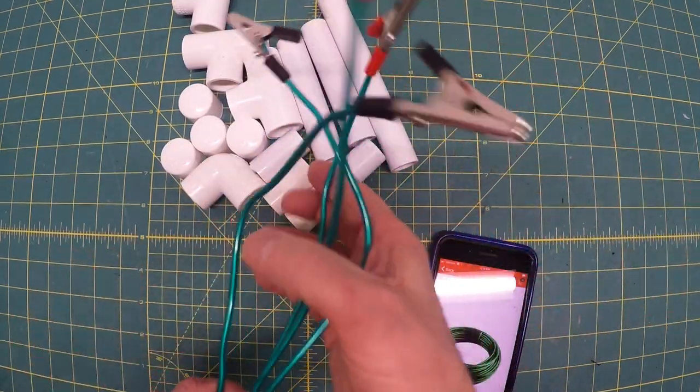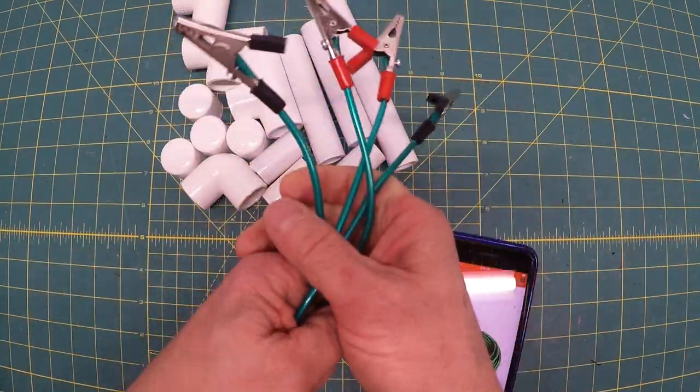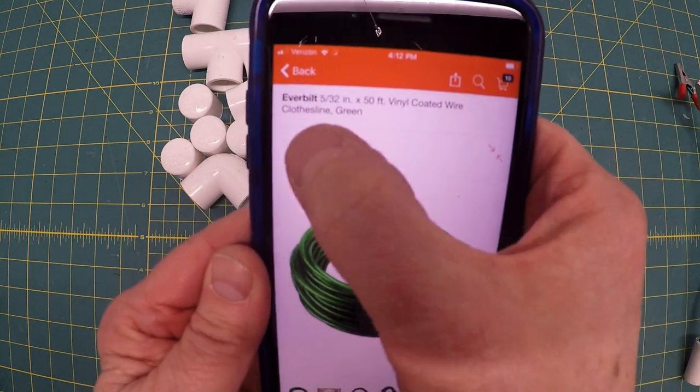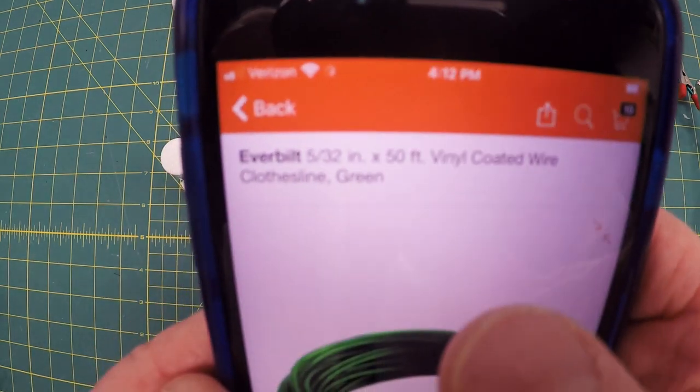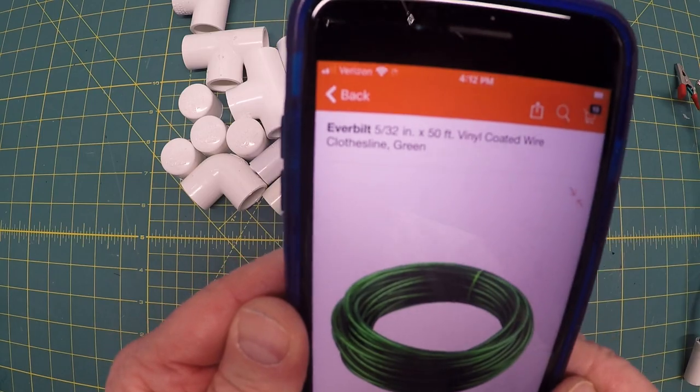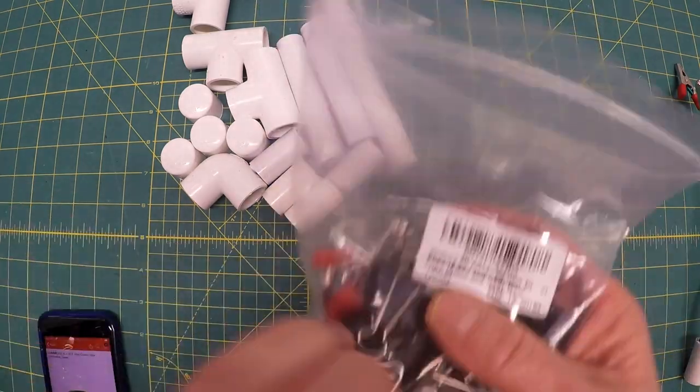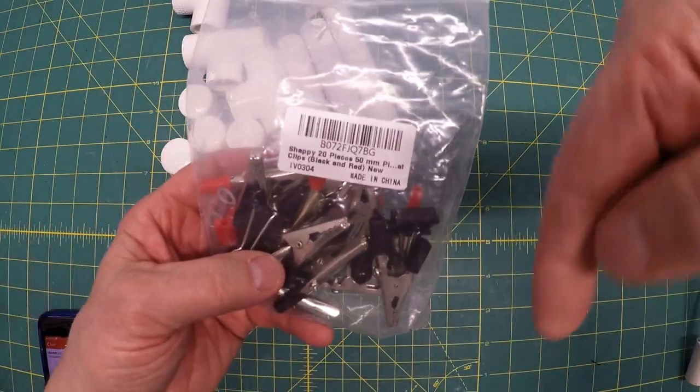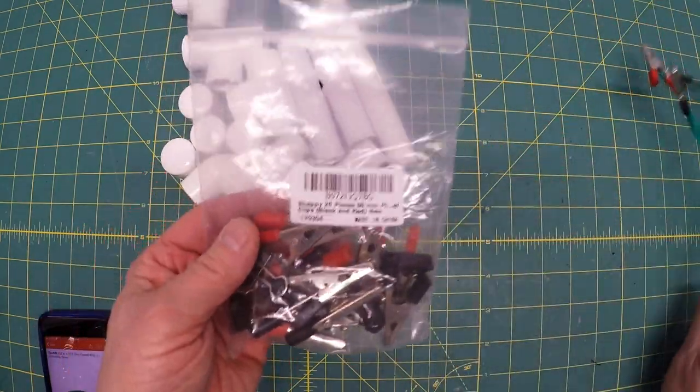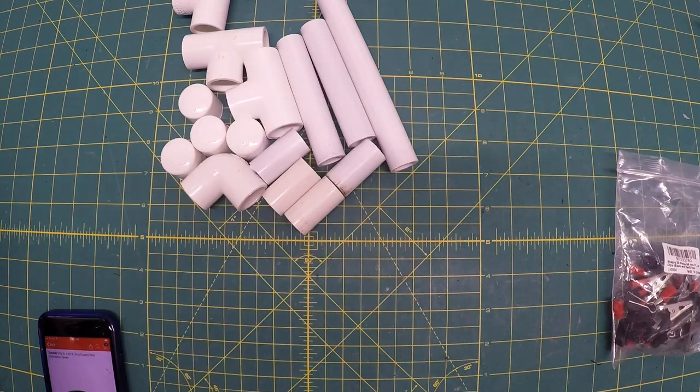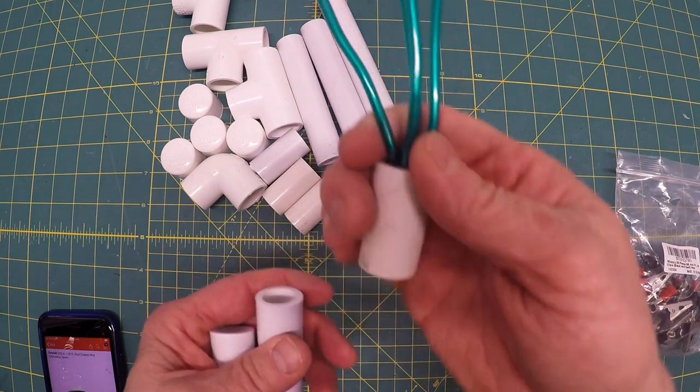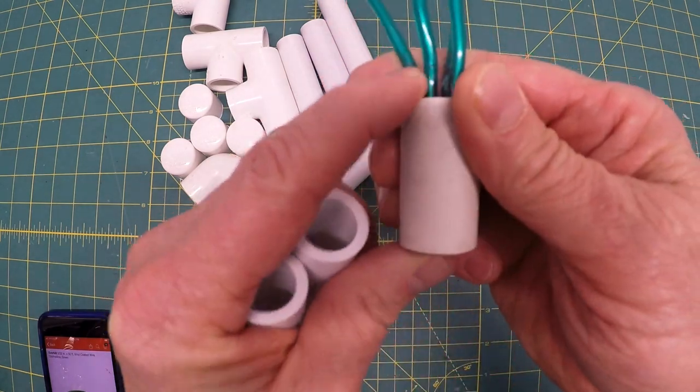If you're going to make the Medusa or the helping hands part you need this EverBuilt or something like it, 5/32 inch 50 feet vinyl coated wire. They call it clothesline green. You need some sort of alligator clips. I'll post this down below. These are relatively cheap and I got a whole bunch of them. They come in both red and green. And then you'll need two additional pieces of one and a half inch PVC pipe there.